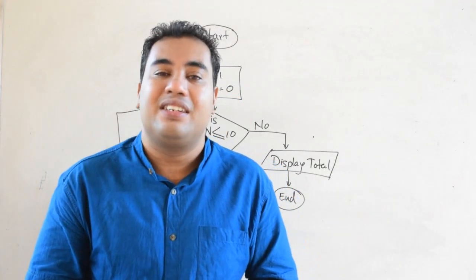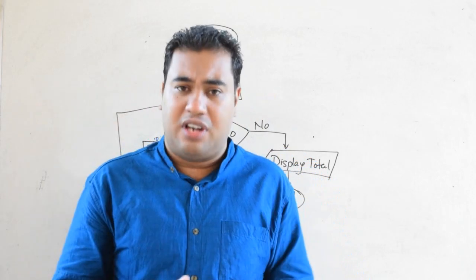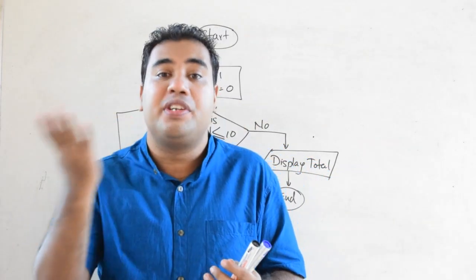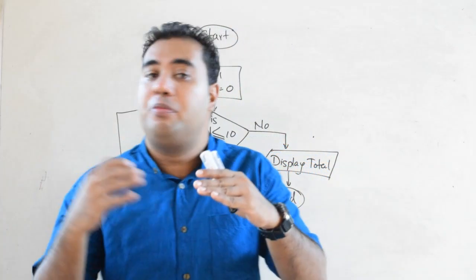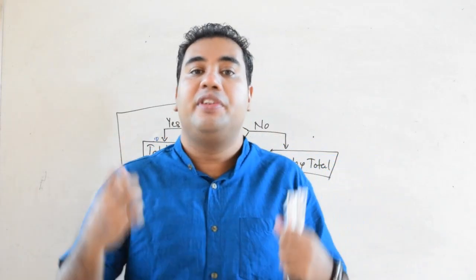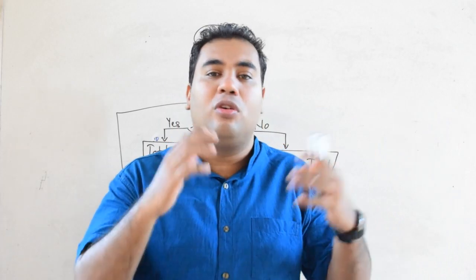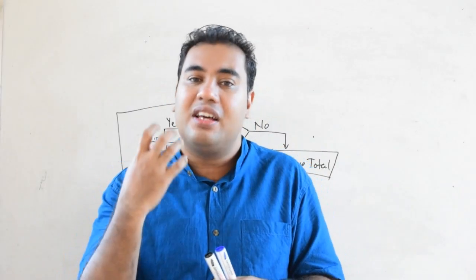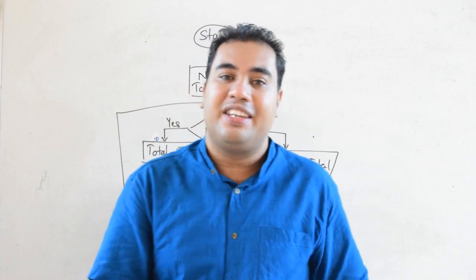That's how we create a repetition within a flowchart. What we did was analyze the problem, make the algorithm, figure out the condition, identify what comes within the repetition, set up the part before the decision symbol, put everything that repeatedly happens inside the loop, and after the repetition place what should happen at the end. It is a simple concept — just figure out the steps you need.